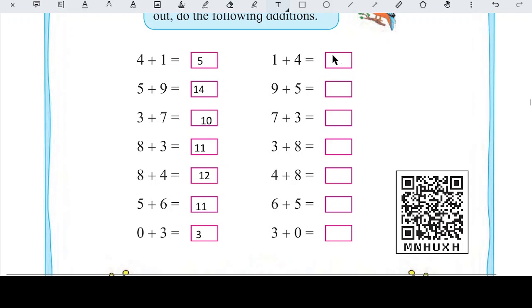1 plus 4, 1 plus 4 kitna hoga? 1, 2, 3, 4, 5. To 1 plus 4 is 5. 9 plus 5, 9 se humein 5 ko add karna hai, so 9 ke baad 5 aur humein sum lena hai uska. So 9, 10, 11, 12, 13, 14. So 9 plus 5 is 14.